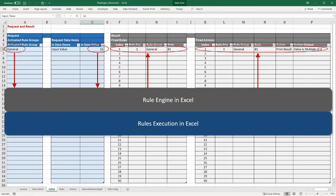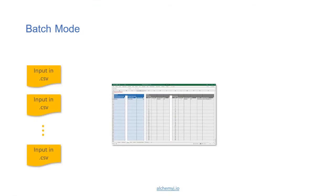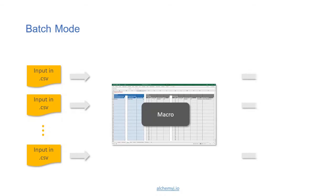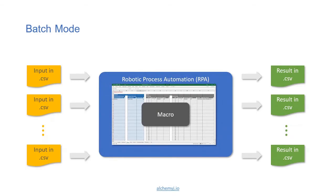To integrate the Excel-based rule engine with your applications, you can run it in 3 other modes. The first is batch mode: save all input values in CSV (comma-separated) files, then run the macro of the rule engine, which takes input from the CSV files and saves output to output CSV files. Batch mode enables processing a collection of input values in a single batch — suitable for batch processing like day-end jobs, and can be used with automation tools such as RPA (robotic process automation) tools.